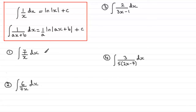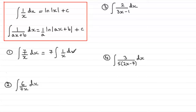Let's go through the first one. We've got a constant 7, so we pull that out the front of the integral: 7 times the integral of 1 over x with respect to x. We can see this matches the first result, so we get 7 multiplied by the natural log of the mod of x, plus the constant of integration c.